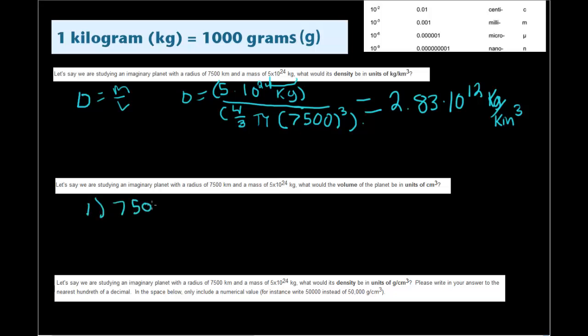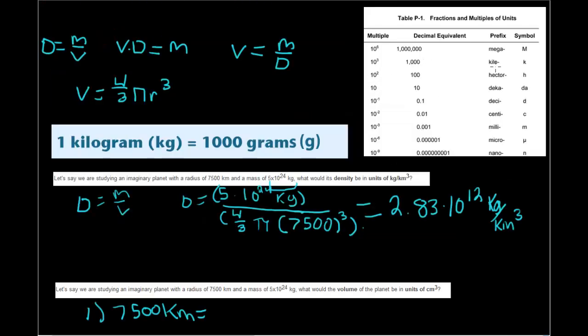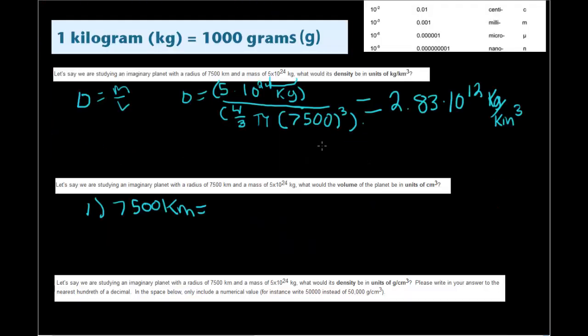So 7,500 kilometers is equal to, according to our metric table here, we got kilometers and centimeters. Well, they're five factors of 10 apart. So you just add five zeros at the end. So then it will become 7.5 times 10 to the 8 centimeters.